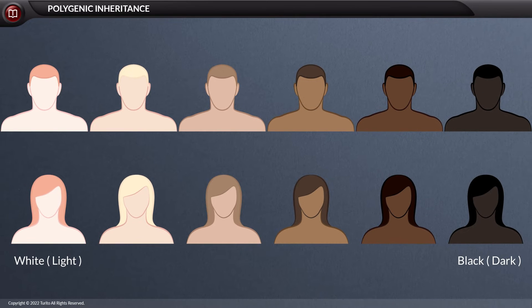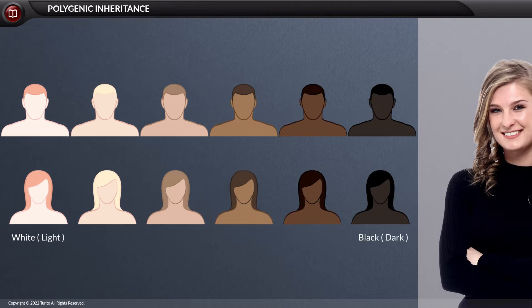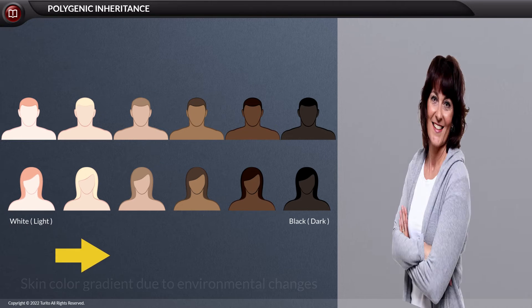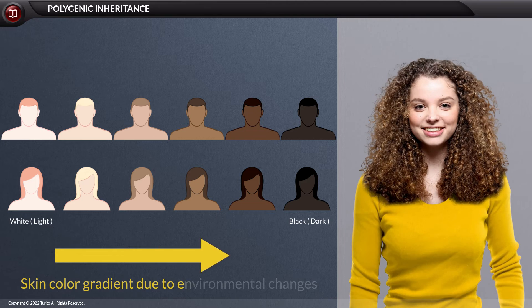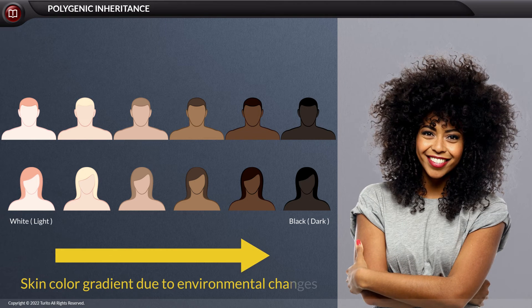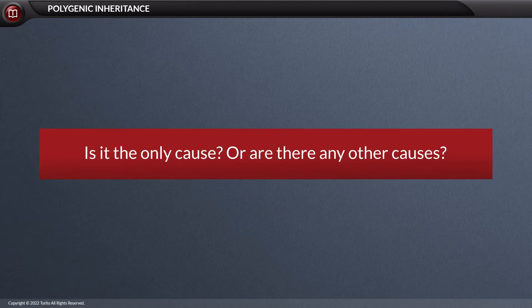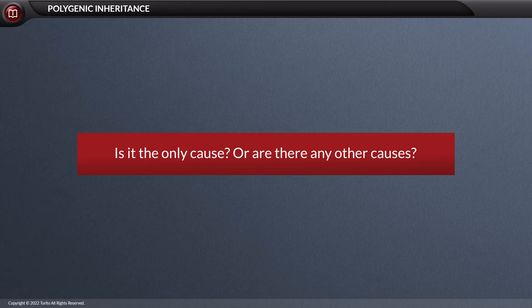Do you know that human skin color varies from white to black, expressing gradation with numerous intermediate phenotypes? There might be multiple skin colors due to the influence of the environment. Is it the only cause, or are there any other causes?